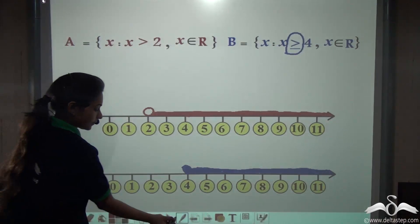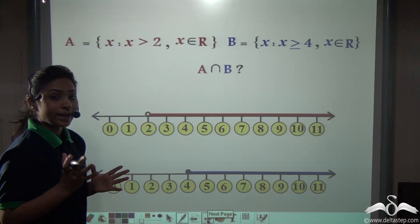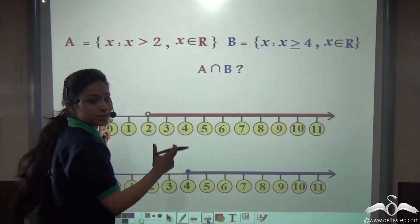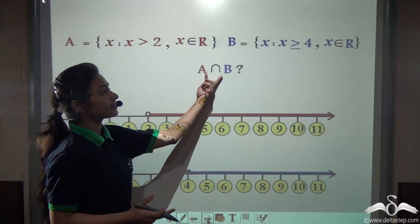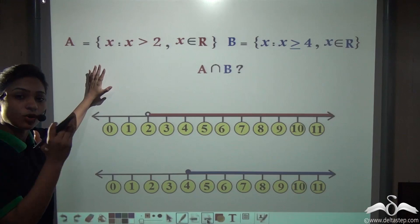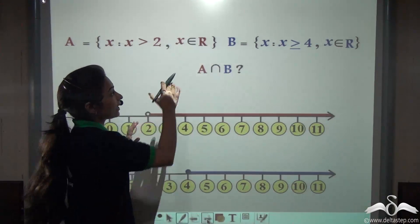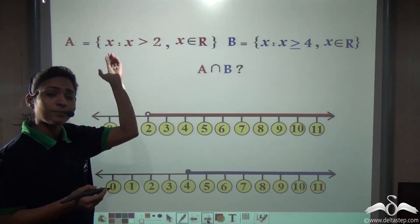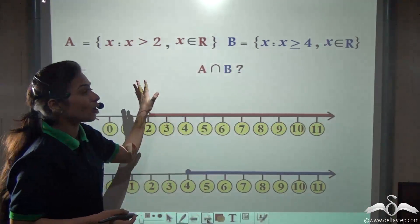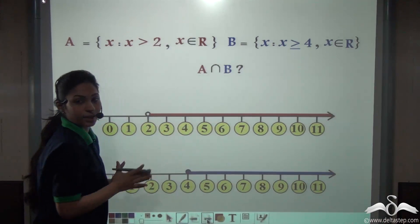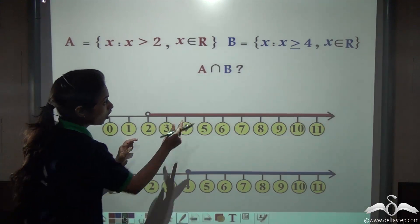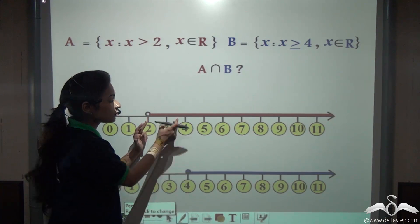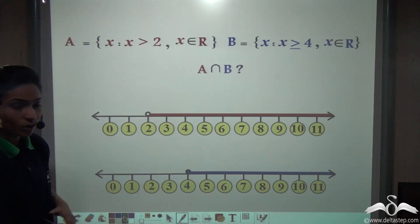We have plotted both solutions on number lines. Now in sets, there is something called intersection of two sets. What is intersection? Elements which belong to both sets. Here, if A is described as this set and B as this set, can you find A intersection B? Intersection means elements common to both sets. Just by looking at the inequations and x belonging to real numbers, you cannot exactly define the elements — you can say 2.1, 2.2, 2.3 and many numbers like that. But the number line will help you see what elements are common to both.